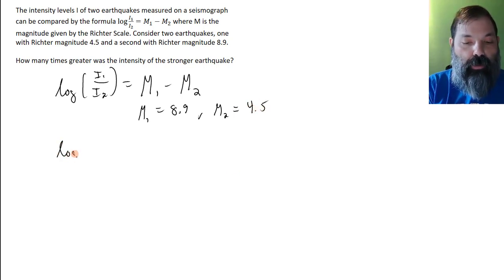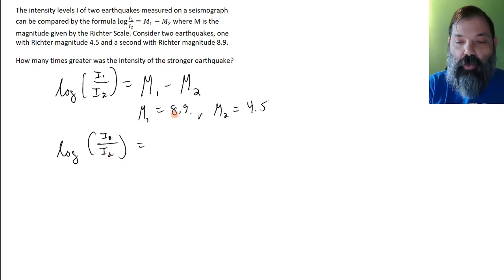So then the logarithm of the ratio of their intensities is 8.9 subtract 4.5, that's 4.4. That's the difference in their magnitudes.